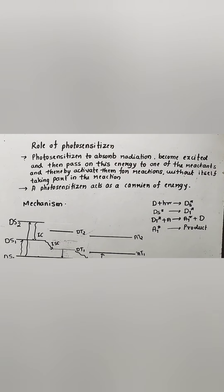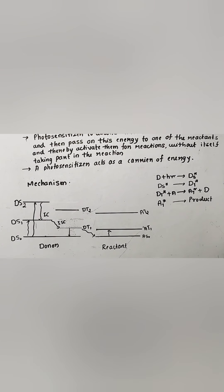Now we'll see the role of the photosensitizer in photochemical reactions. Initially the photosensitizer absorbs radiation and becomes excited, and later it passes its energy to one of the reactants, thereby activating the reaction. The photosensitizer does not take part in the reaction itself, which is why it is called a carrier of energy. Do not confuse it with a catalyst — in catalysis the catalyst promotes the reaction, but here the photosensitizer transfers its energy to activate the reaction.